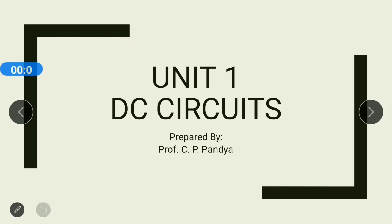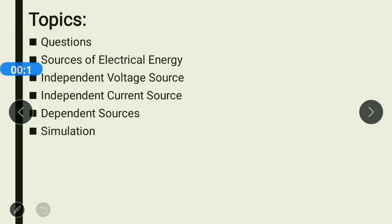Welcome to the series of video lectures for basic electrical engineering. In this video you will learn about some important topics from the unit of DC circuits. We will start with some questions today, then based on the video I uploaded earlier you will comment all the answers. Then I will explain the meaning of source of electrical energy, discuss the various types of energy sources, and finally end the video with a simulation on ideal and practical voltage sources.